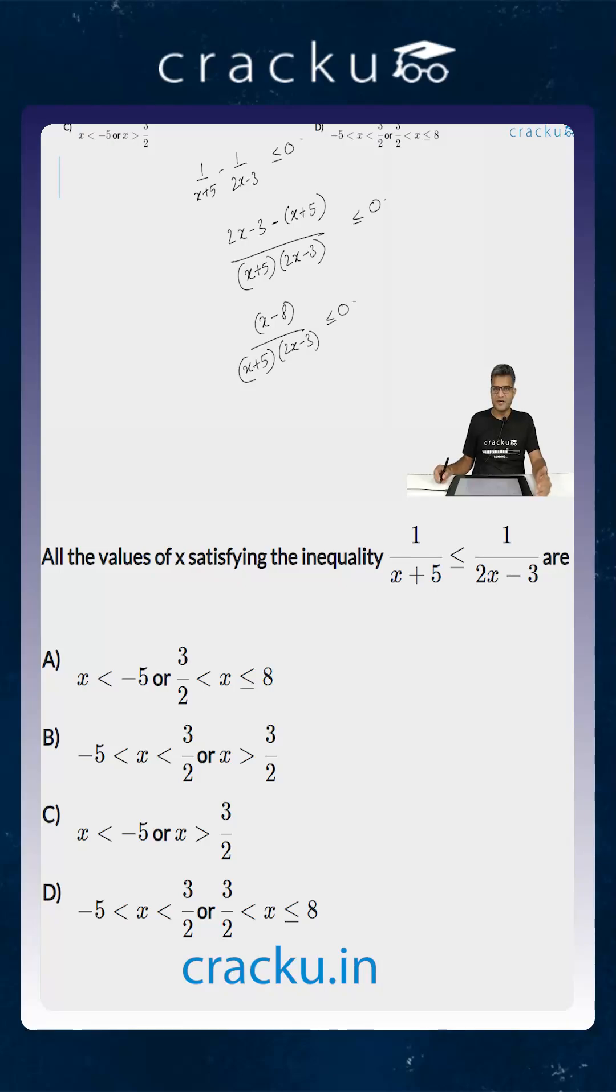If you multiply the numerator and denominator with (x+5)² and 2x-3, essentially left-hand side and right-hand side because we want to bring this up to the top, then this will essentially imply that (x+5)(2x-3)(x-8) ≤ 0.